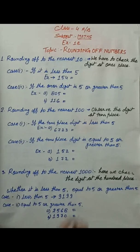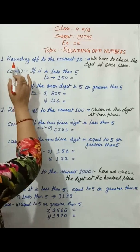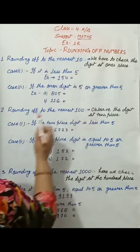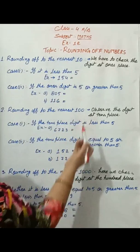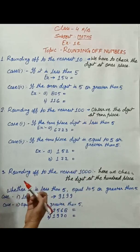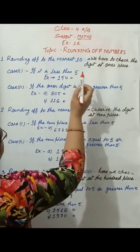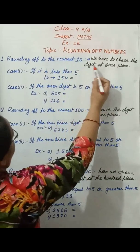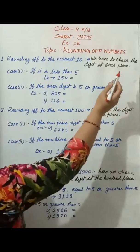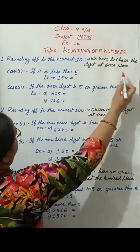So students, rounding of numbers. We will cover rounding up to the nearest ten, rounding up to the nearest hundred, and rounding up to the nearest thousand. First, we consider rounding up to the nearest ten. For this, we have to check the digit at the ones place.